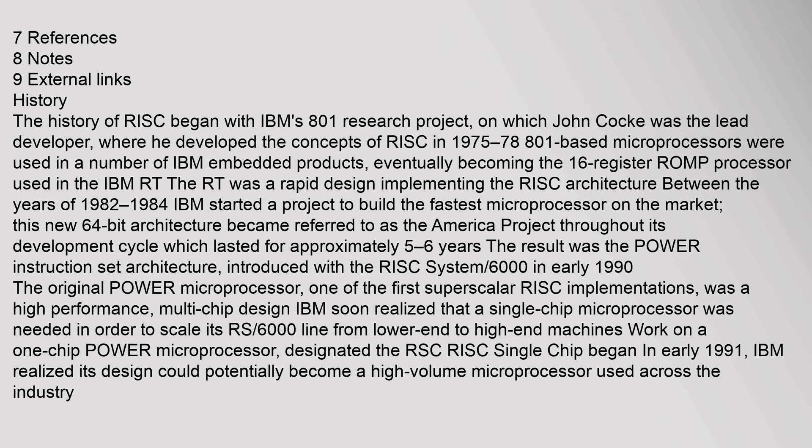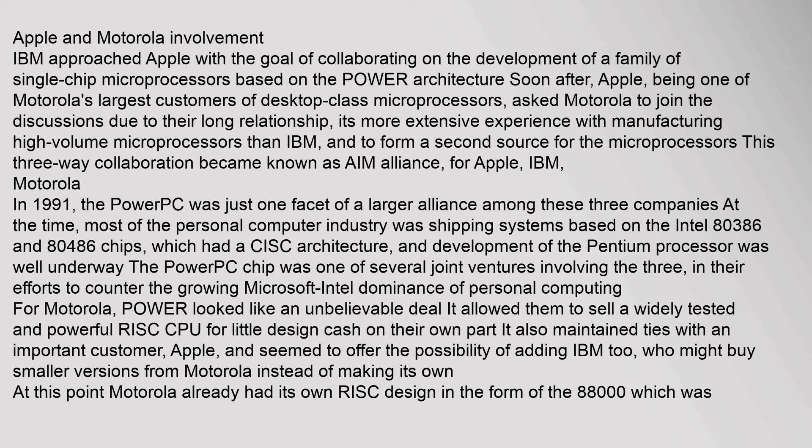IBM approached Apple with the goal of collaborating on the development of a family of single-chip microprocessors based on the Power architecture. Apple, being one of Motorola's largest customers of desktop-class microprocessors, asked Motorola to join the discussions due to their long relationship, Motorola's more extensive experience with manufacturing high-volume microprocessors, and to form a second source for the microprocessors. This three-way collaboration became known as the AIM Alliance, for Apple, IBM, and Motorola, in 1991.